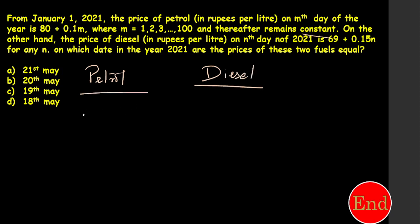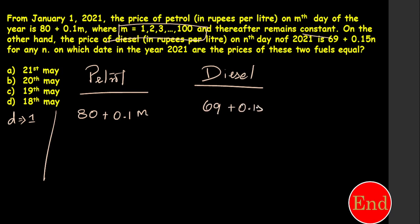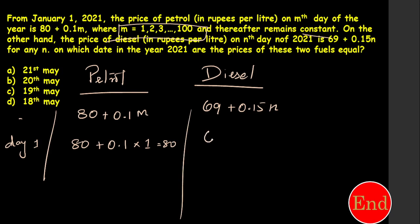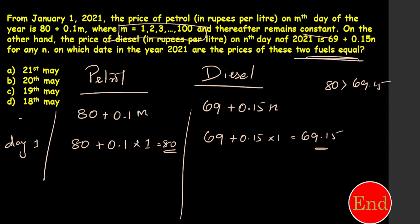Let me take one side as petrol and the other as diesel. Petrol rate is given by the equation 80 plus 0.1 times M. M is the number of days from 1 to 100. On Day 1, petrol rate is 80 plus 0.1 times 1, which is approximately 80.1. Diesel on Day 1 is 69 plus 0.15 times 1, which is 69.15. So on Day 1, petrol at 80 is greater than diesel at 69.15.